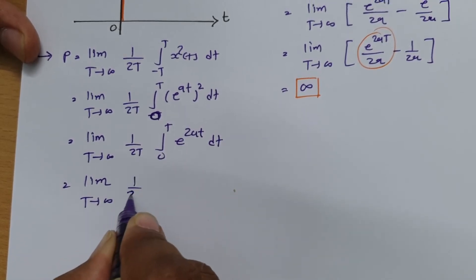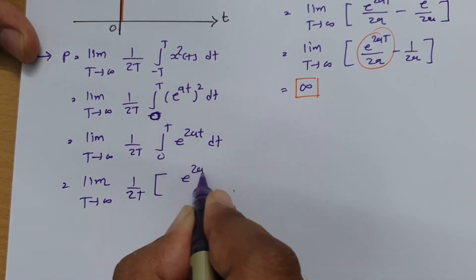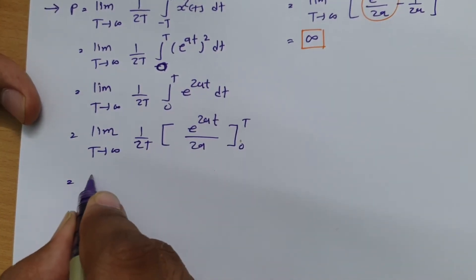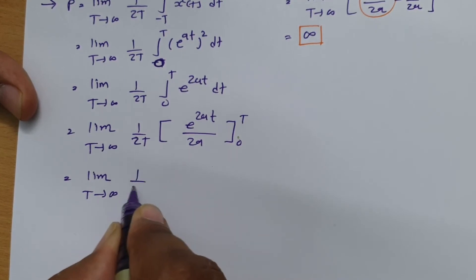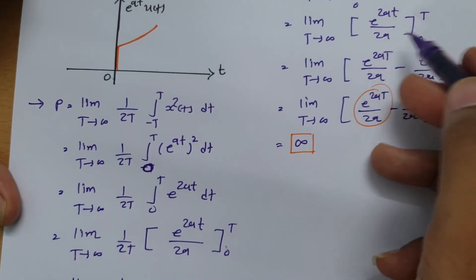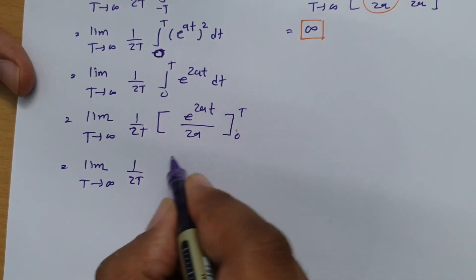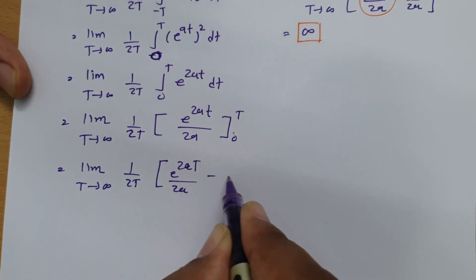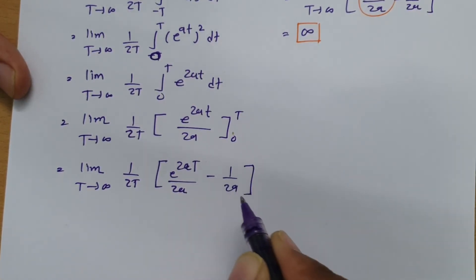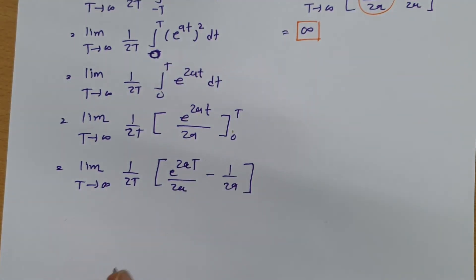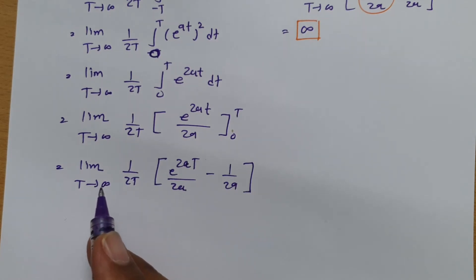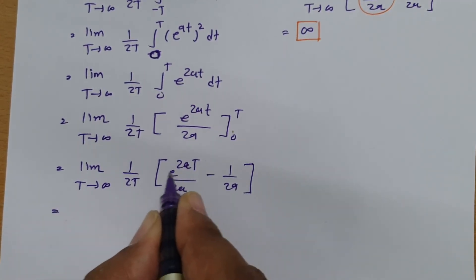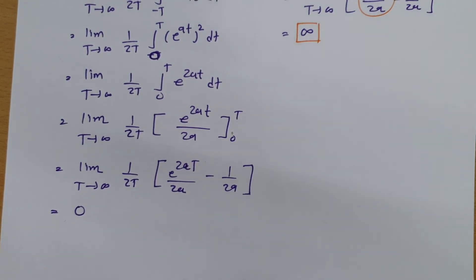Performing the integration gives: limit as T→∞ of (1/2T) times [e^(2aT)/(2a) − 1/(2a)]. As T→∞, the factor (1/T) times the exponential term: since 1/T → 0 as T→∞, and (1/2T)·[e^(2aT)/(2a)] — however, the leading (1/2T) factor means the whole expression → 0. Therefore, power equals zero.